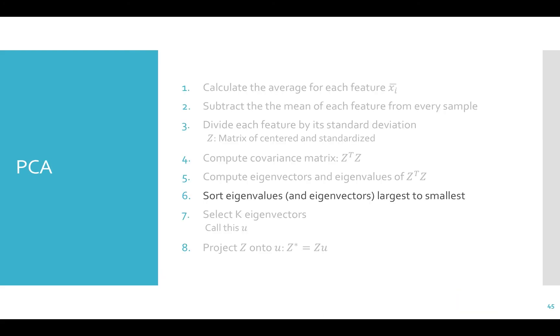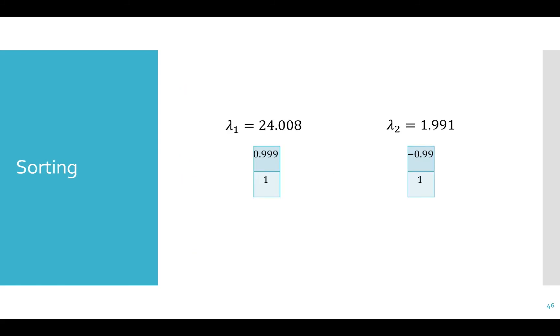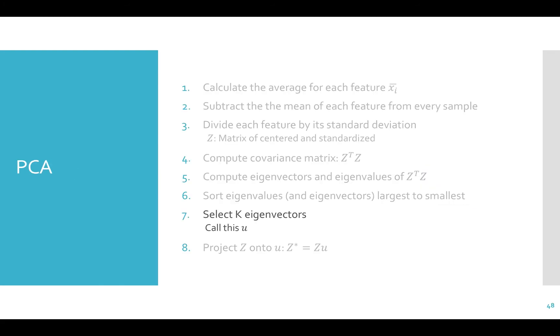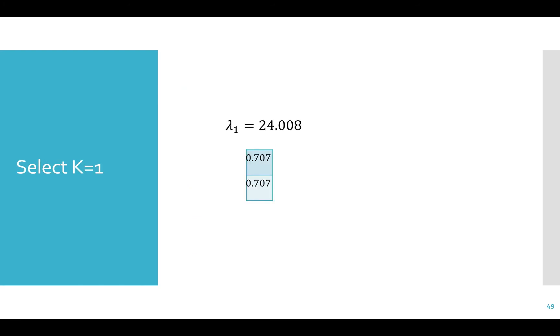On to step 6. We need to sort the eigenvalues and corresponding eigenvectors from largest to smallest. Here, this is trivial because we only have two eigenvectors. The first one is associated with the largest eigenvalue of 24.008, and the second one has an eigenvalue of 1.991. I almost forgot a step. Don't forget you have to normalize the eigenvectors so they have length 1. Now we need to select the K largest eigenvectors and construct the matrix U. Since we only have two dimensions, let's see what our data looks like in one dimension. So we'll choose K equals 1.